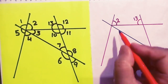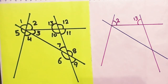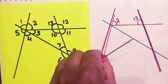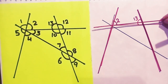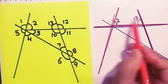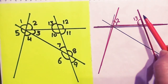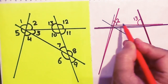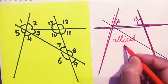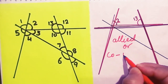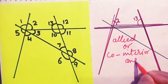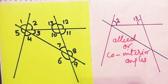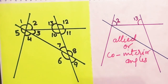For angles 2 and 13, have a look. This is one line, this is another line, and this is the transversal. These two angles are formed on one side between the two lines. Therefore, they are known as allied or co-interior angles. I hope it is loud and clear, and you will not forget it by any means.